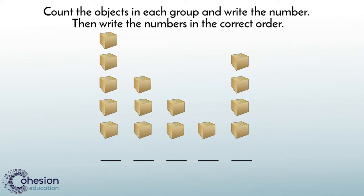Let's take a look at another way to place numbers in order. Count the objects in each group and write the number. Then, write the numbers in the correct order.